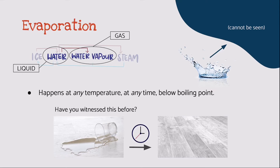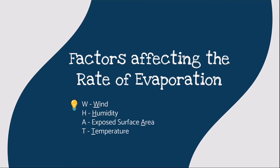But if evaporation occurs at any temperature, does that mean that it also occurs in the freezing cold environment? Before we answer the question, let's talk about what affects the rate of evaporation — or how fast or slow evaporation happens. The four factors affecting the rate of evaporation include wind, humidity, exposed surface area, and temperature. Notice that the underlined alphabets form the word WHAT. This is an effective study tip that you can use to remember the factors affecting the rate of evaporation.